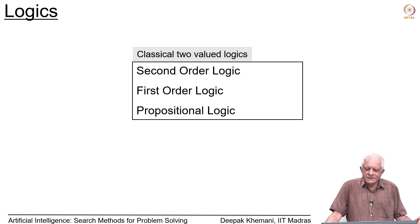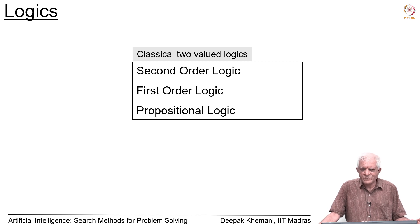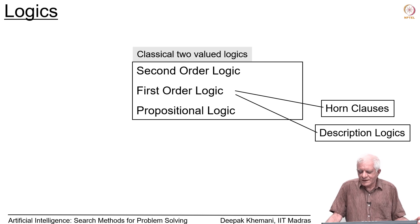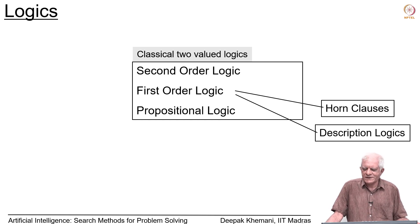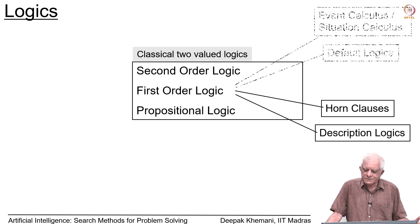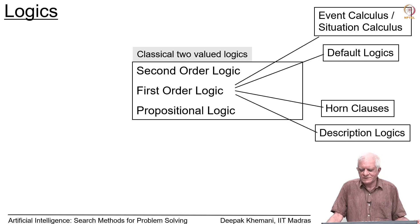Second-order logic is more expressive, allowing quantification over relations and predicates rather than just objects. However, as logics become more expressive they also become computationally harder. Gödel's incompleteness theorem addresses second-order logic. Because first-order logic proofs can be exponentially long, people have studied restricted versions: horn clause logic and description logics are subsets of first-order logic that are computationally tractable.